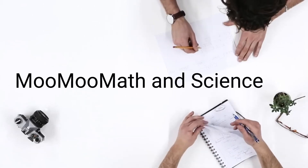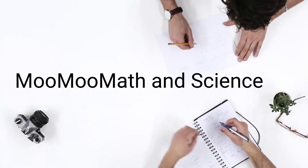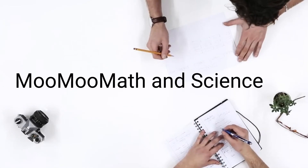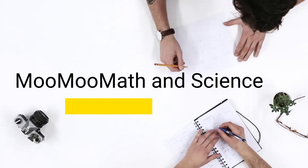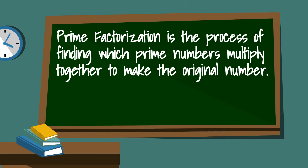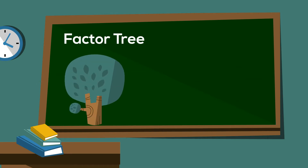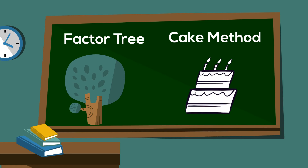Welcome to Moo Moo Math and Science. In this video I'd like to talk about two different ways for prime factorization. Prime factorization is the process of finding which prime numbers multiplied together to make the original number. I'd like to first go over prime factorization using a factor tree, and then the second way is using what is called the cake method.